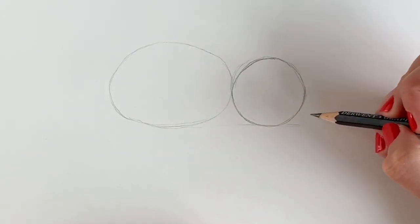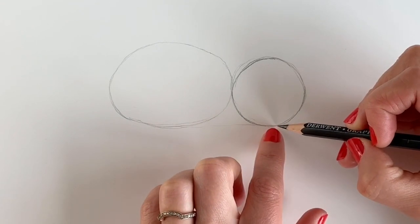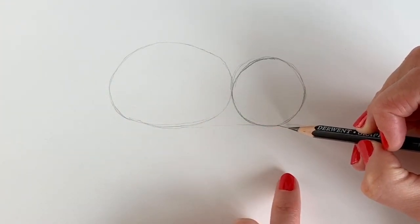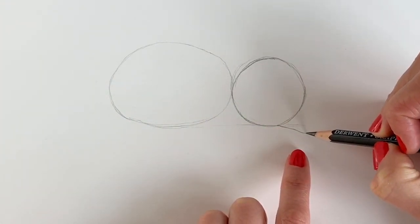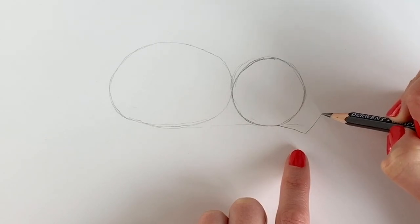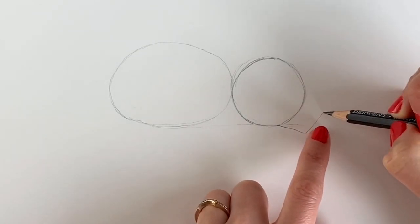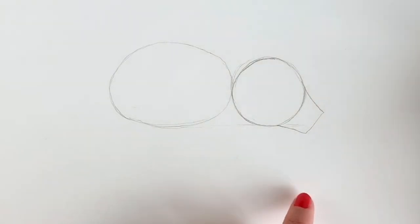Next we're going to add the little snout. From this circle, we're going to be drawing a line just diagonally downwards. It's going to come up and then it's going to join up that circle again, just like so.